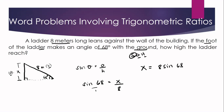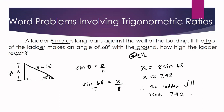Using the calculator, 8 × sine 68° gives approximately 7.42. Therefore, the ladder will reach approximately 7.42 meters on the wall.